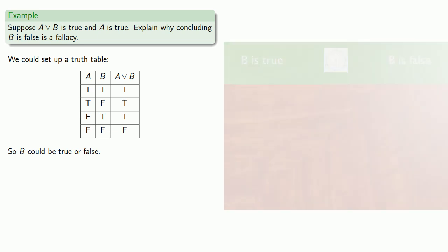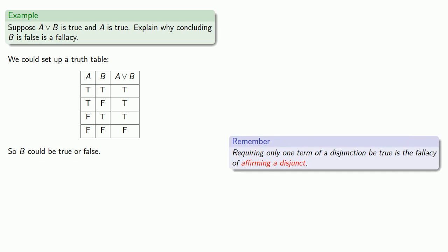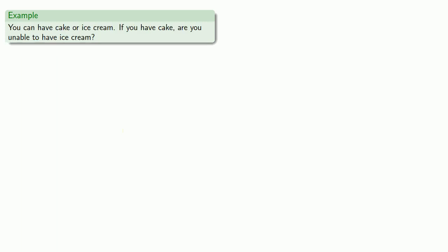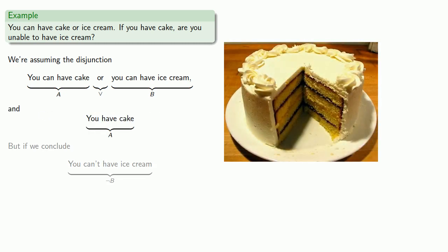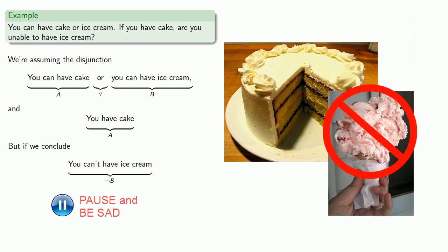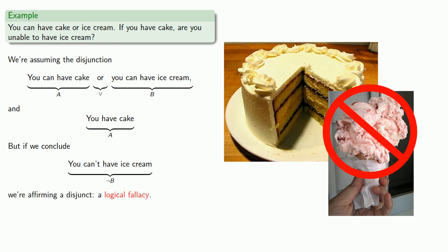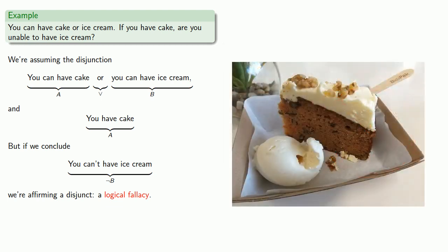This is a common enough fallacy that it has its own name. Requiring only one term of a disjunction to be true is the fallacy of affirming a disjunct. For example: you can have cake or ice cream — if you have cake, are you unable to have ice cream? We're assuming the disjunction 'you can have cake or you can have ice cream,' and also assuming that you have cake. But if we conclude you can't have ice cream — the negation of B — we're affirming a disjunct, which is a logical fallacy. In particular, you can have both cake as well as ice cream.